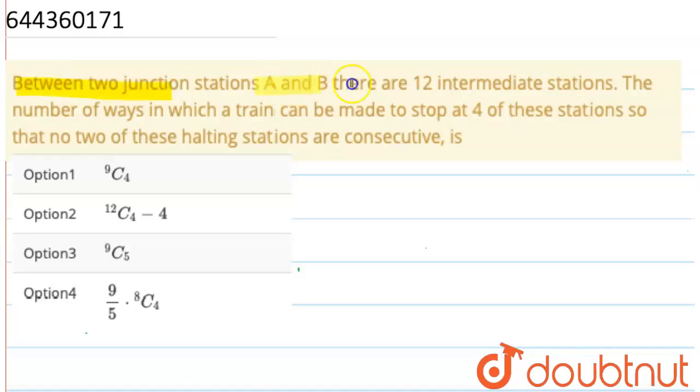Between two junctions A and B, there are 12 intermediate stations. The number of ways in which a train can be made to stop at four of these stations so that no two of these halting stations are consecutive. We are given three options and we have to tell which of the following option is correct.